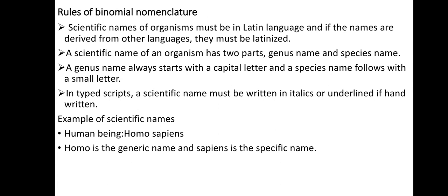The second rule is that a scientific name of an organism has two parts: a genus name and a species name. The third rule is that the genus name always starts with a capital letter and the species name follows with a small letter. This must be noticed when writing scientific names. The fourth rule is that when typeset, the scientific name must be written in italics, or underlined if handwritten.